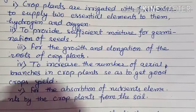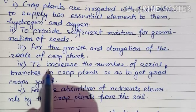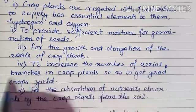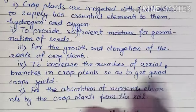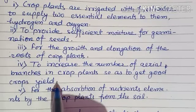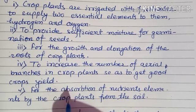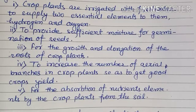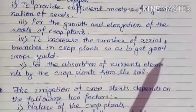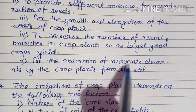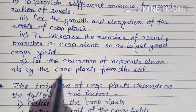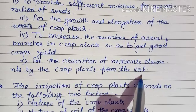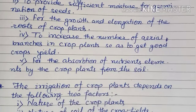The fourth goal is to increase the number of aerial branches in crop plants so as to get good crop yield. This is because the number of aerial branches gets reduced in dry soil, which leads to loss in crop yield. The fifth goal is for the absorption of nutrient elements by crop plants from the soil.